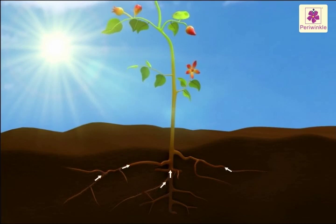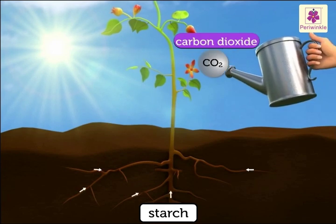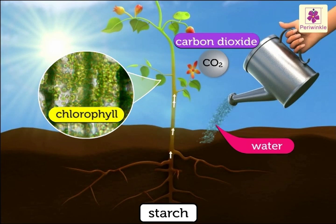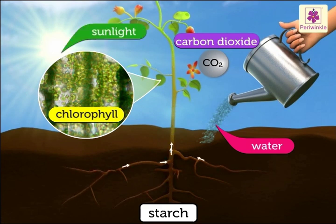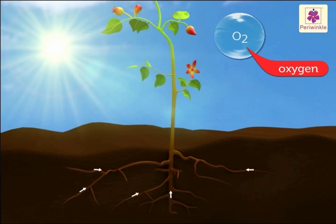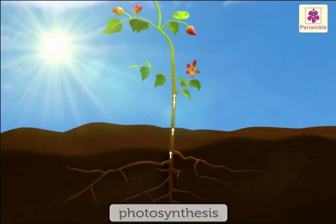The plant food is called starch. Carbon dioxide plus water, in the presence of chlorophyll and sunlight, gives starch — that is the plant food — and oxygen that is released into the air. This process is called photosynthesis.